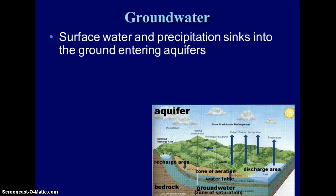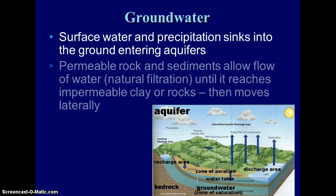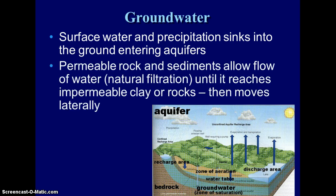In the last module we looked at surface water. What we're going to concentrate on in this one is groundwater. Surface water can sink into the ground, or precipitation can sink into the ground and enter what we call aquifers. An aquifer is either permeable rock, which means it allows water to flow through, or sediments that allow water to flow.